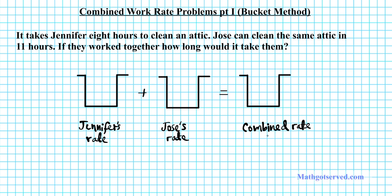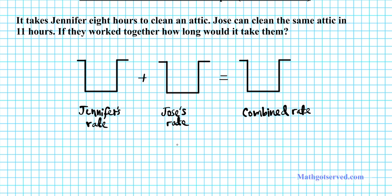The combined rate is Jennifer and Jose working together. Now to populate our buckets with the right values we need to determine the equation that relates all the measures that we have here. So the main equation we're looking at is the amount of work done is equal to the rate at which they work times the time.